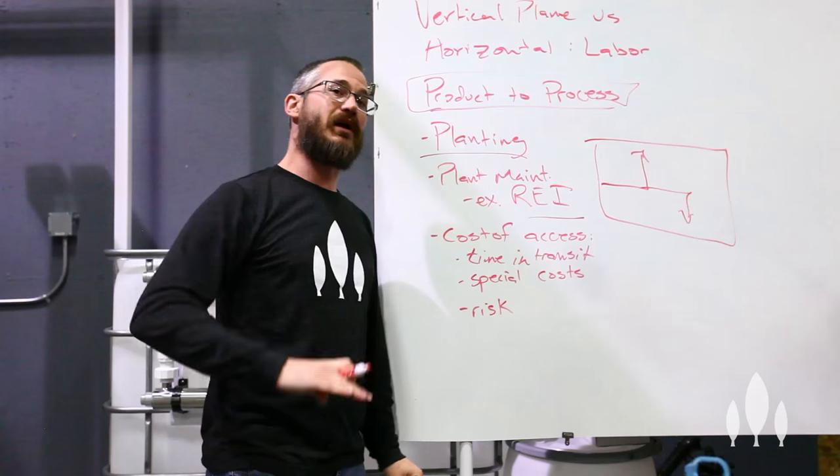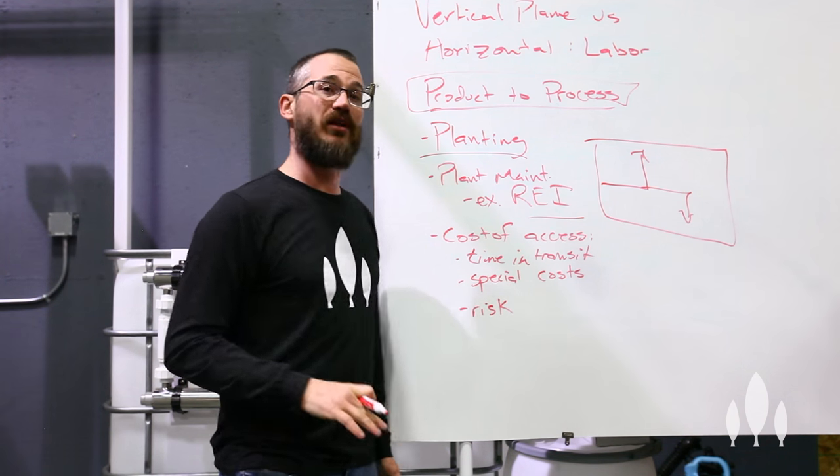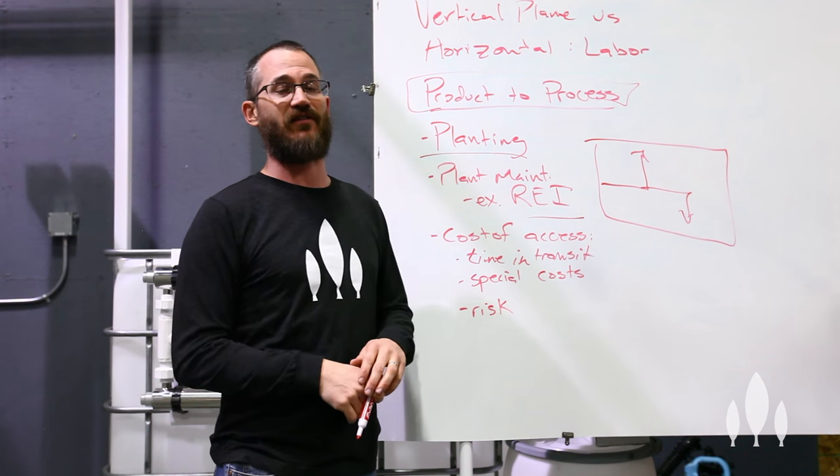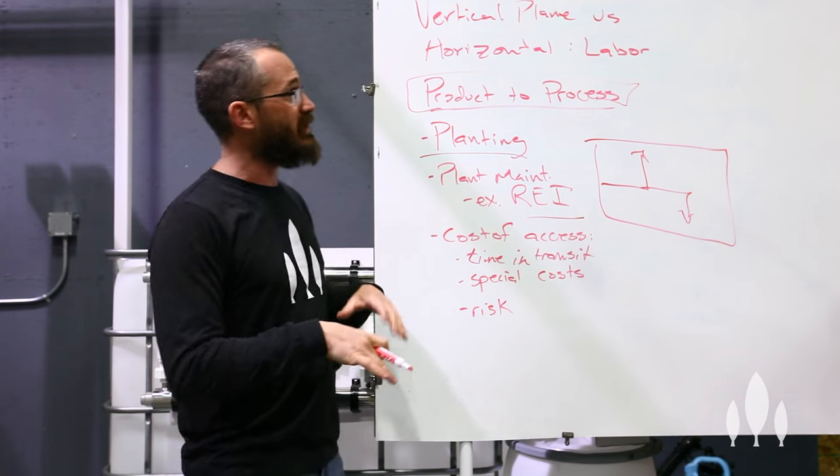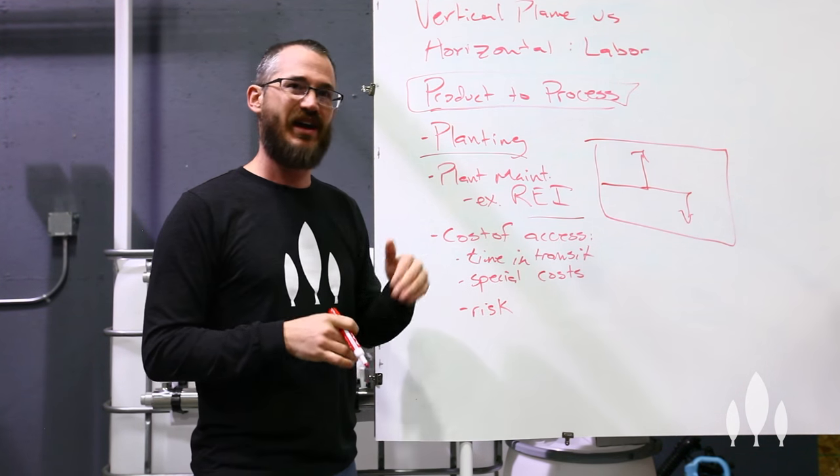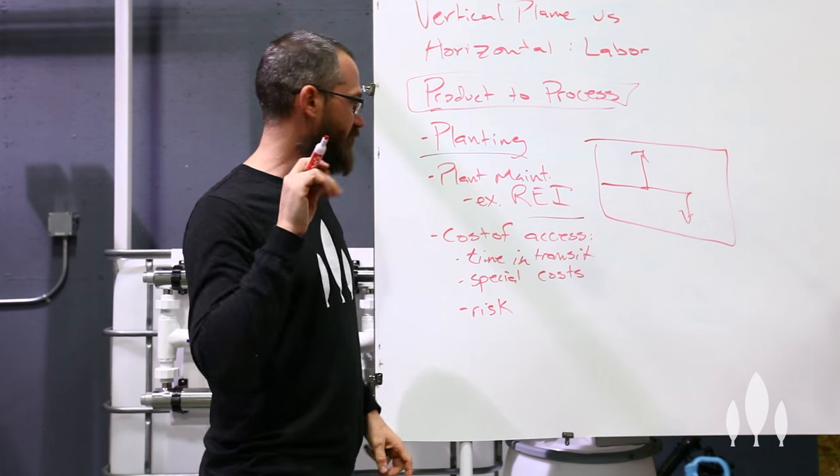Additionally, when you're on scissor lifts going up and down, you spend a lot of time because these things are not fast. You spend a lot of time going up and down to access produce that you wouldn't otherwise have to spend. When we do vertical plane production, we can check everything from the ground. So we can basically stand at ground level and do visual confirmation that plants are healthy, check on pests, check on deficiencies, that kind of thing. And that saves us a lot of money.